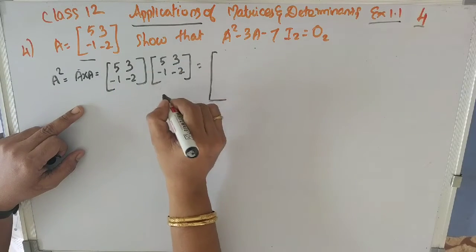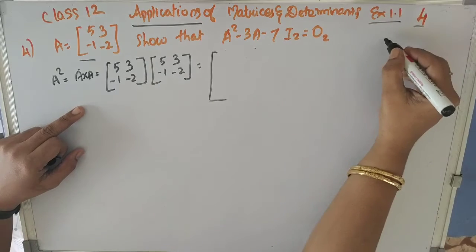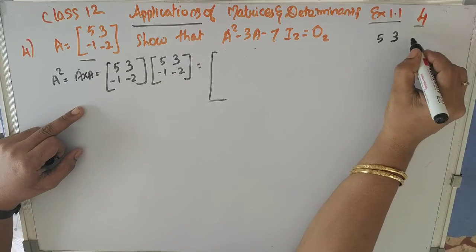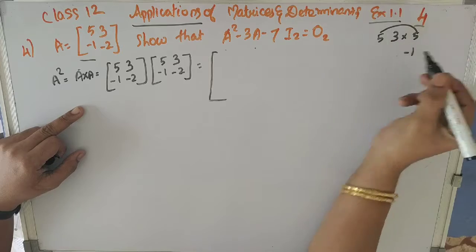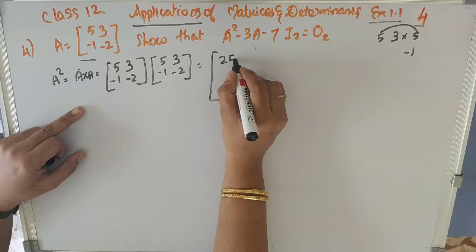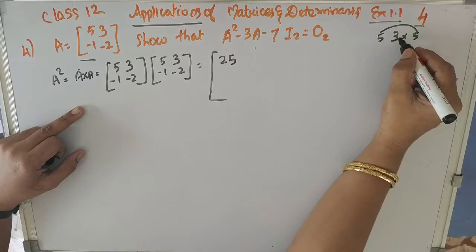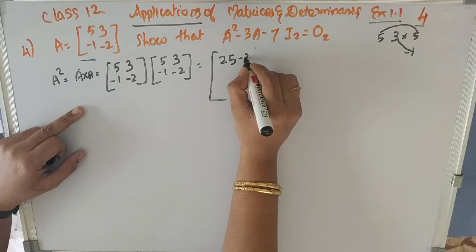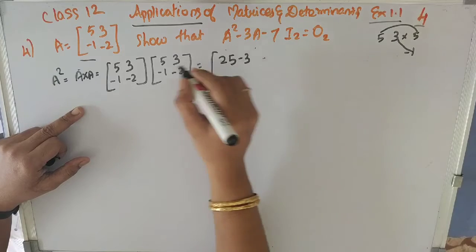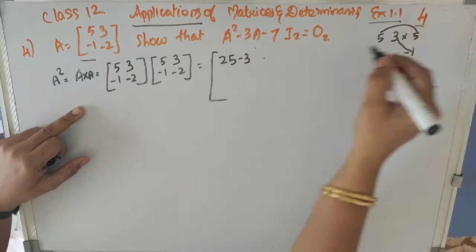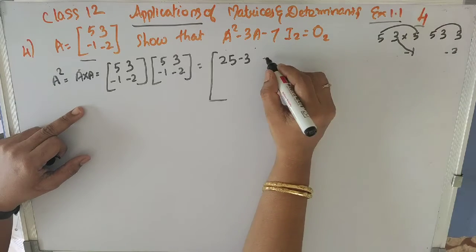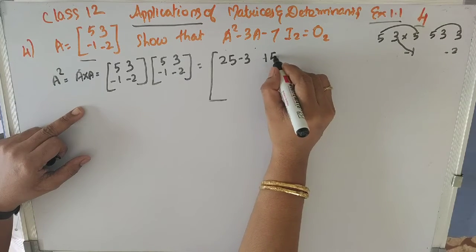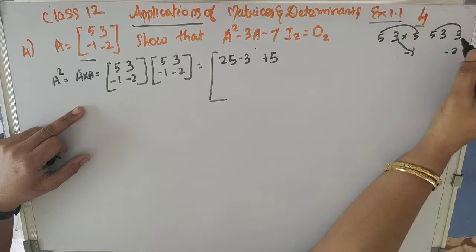Row 1 into column 1: that is 5 into 5 plus 3 into minus 1. Row is 5, 3 and column is 5, minus 1. So 5 into 5 is 25, plus 3 into minus 1 is minus 3. Row 1 into column 2: row 1 is 5, 3 and column 2 is 3, minus 2. So 5 into 3 is 15, plus 3 into minus 2 is minus 6.